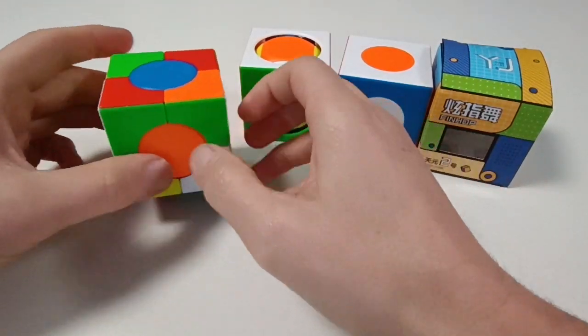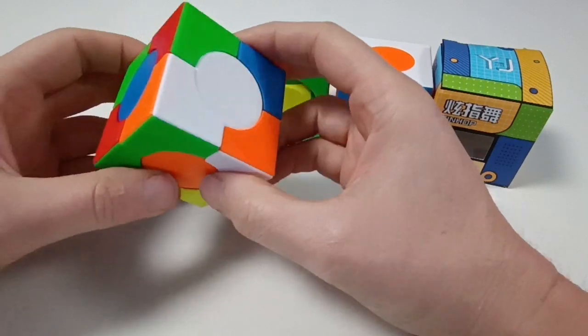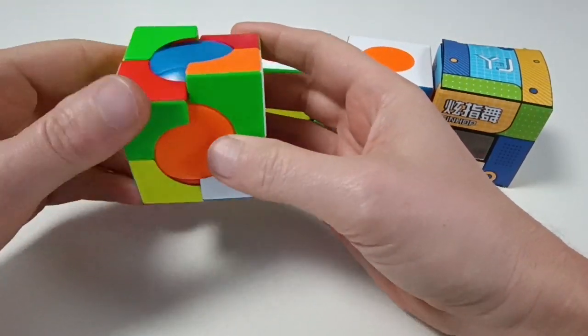So there are three Yongyun, Finhop, Tianyuan and let's try to solve this like a regular 3x3.